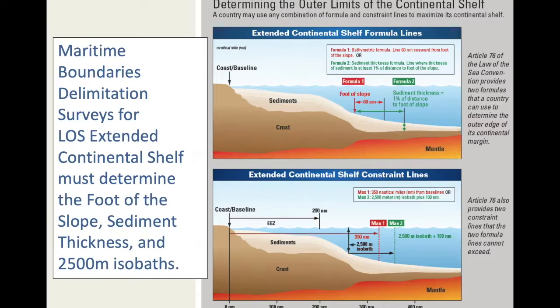Maritime boundaries are very important. For the extended continental shelf formula lines: Formula One is finding the foot of the slope and going out 60 nautical miles; Formula Two is where the sediment thickness equals 1% of the distance to the foot of the slope. Either formula can be chosen to determine the outer edge of the continental margin — of course this requires hydrographic survey. Article 76 also provides two constraint lines: a maximum of 350 nautical miles from baseline, or 2500 meter isobath plus 100 nautical miles.